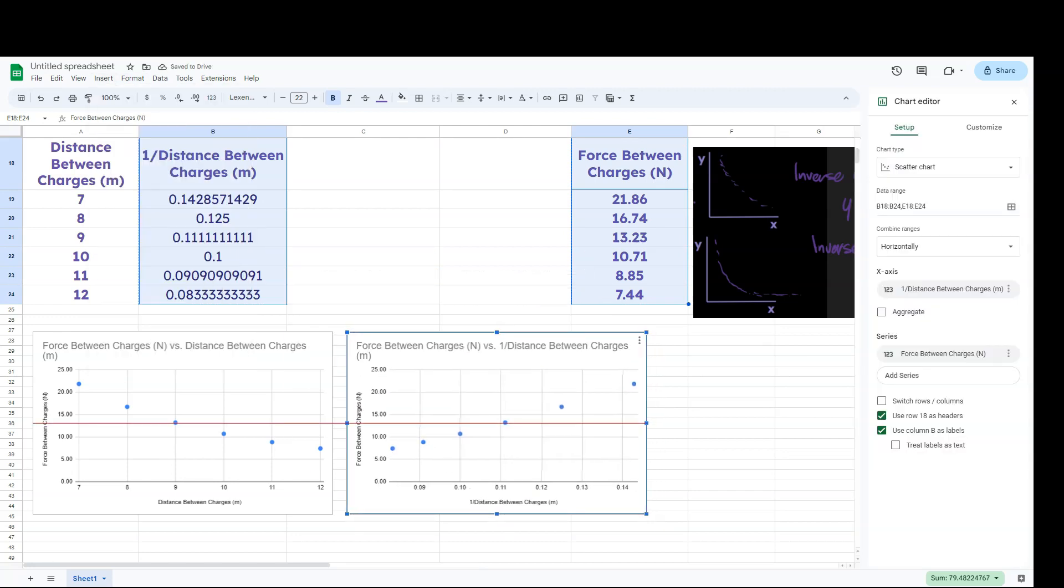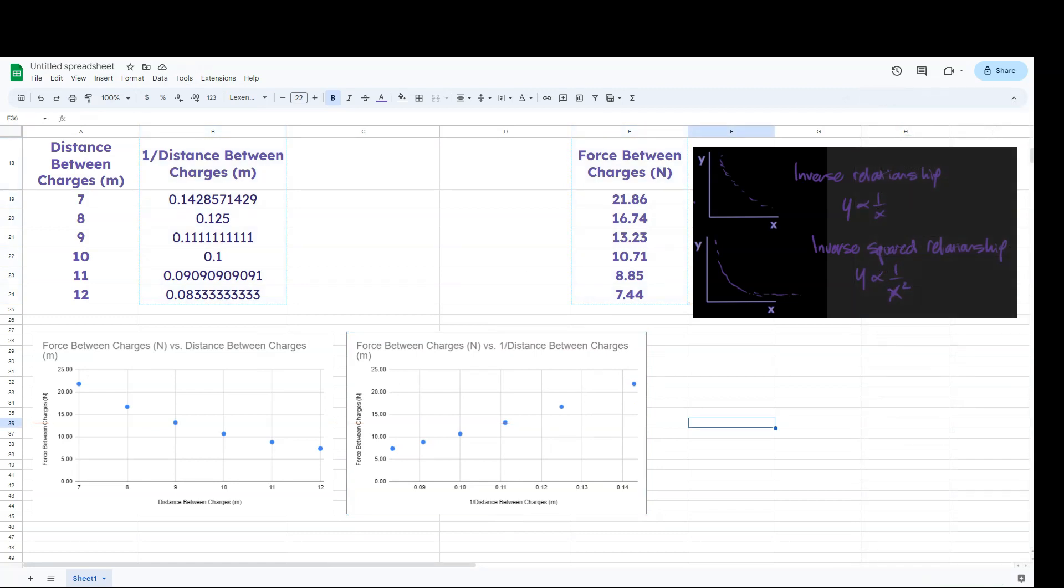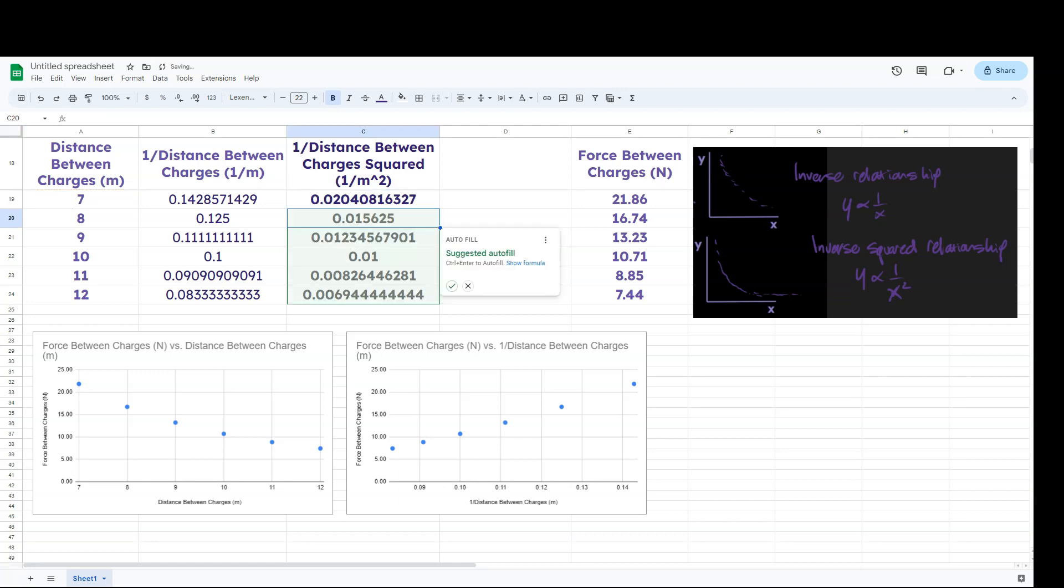All right, so what do you notice here? Well, I will point out that notice that the data itself, it's not entirely straight. At first glance, it may appear to be straight, but actually it may still be more curved. So let's try the inverse squared relationship and see what happens here. One divided by this squared. So I'm hitting shift six for the up caret and the two over here. And that we can go ahead and fill in the rest of these.